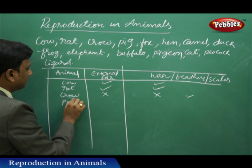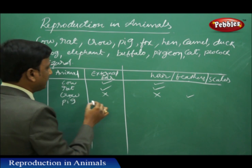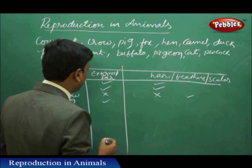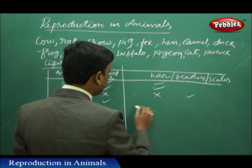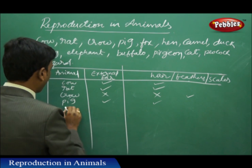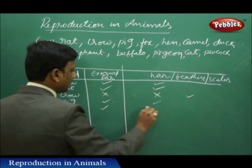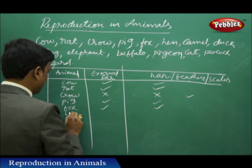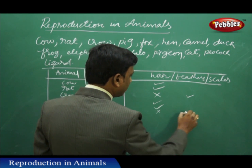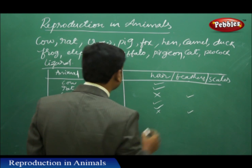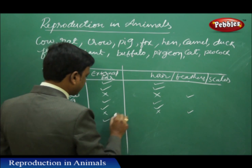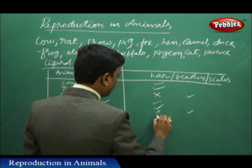And if we take the pig — pig is having external ear and hairs on the body. And fox — external ear and hairs. Hen — no external ear, no hair, feathers. And camel has got external ear and hairs.